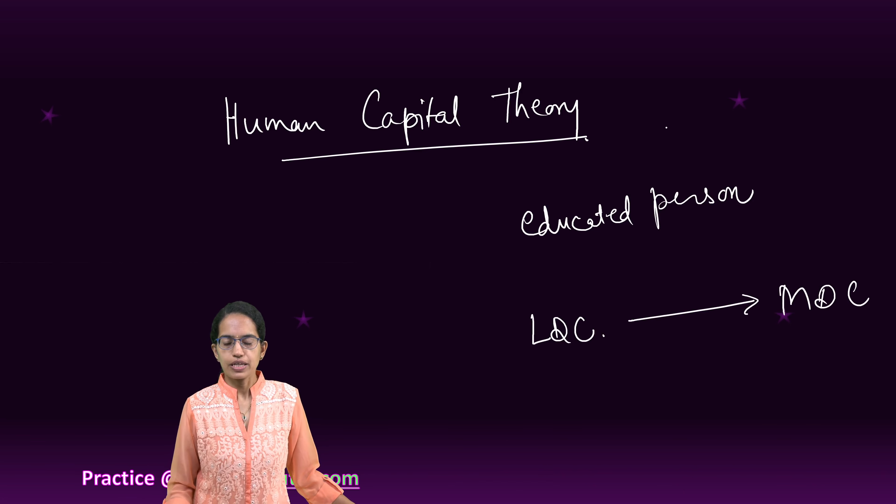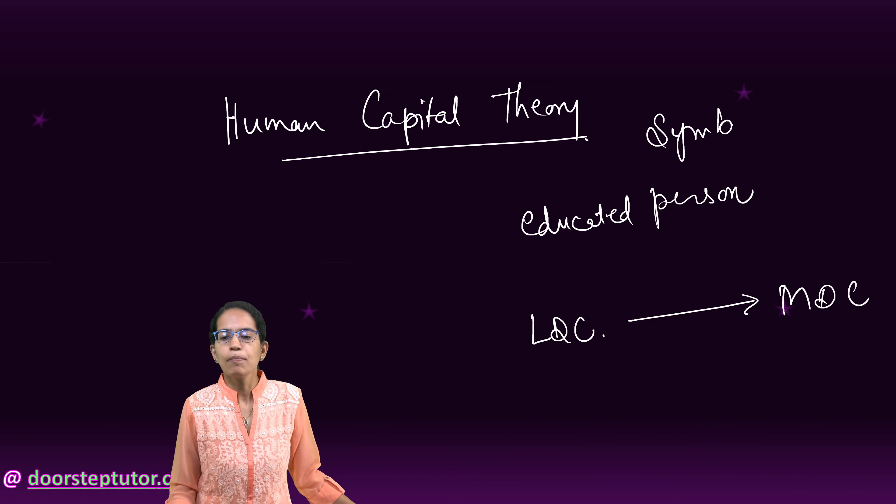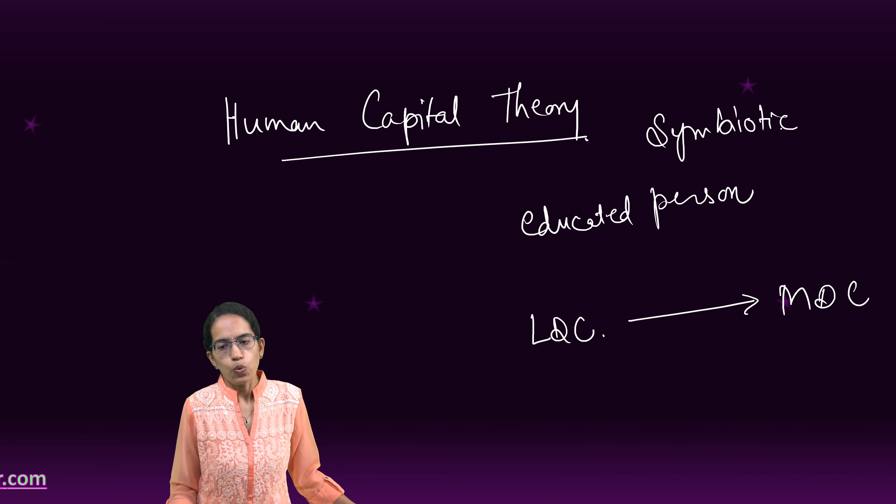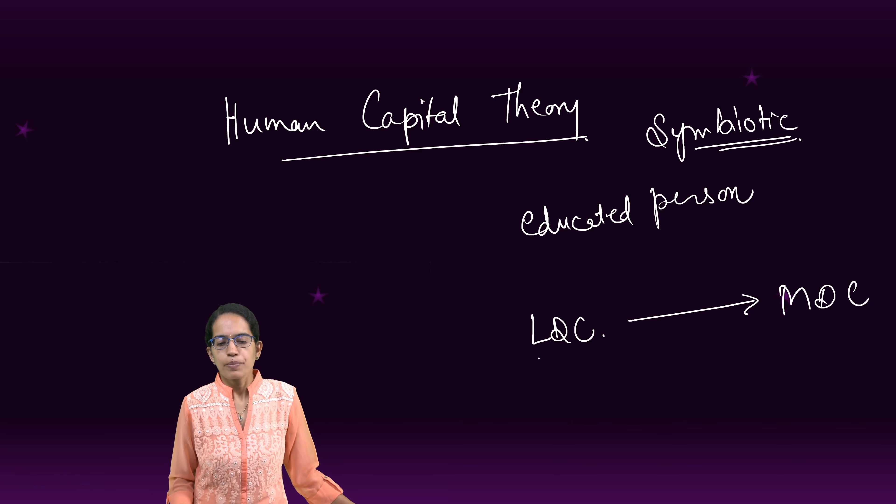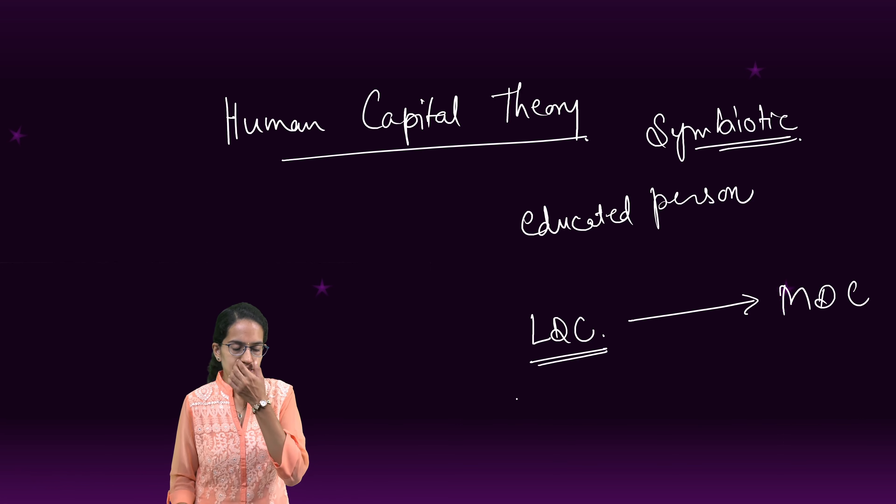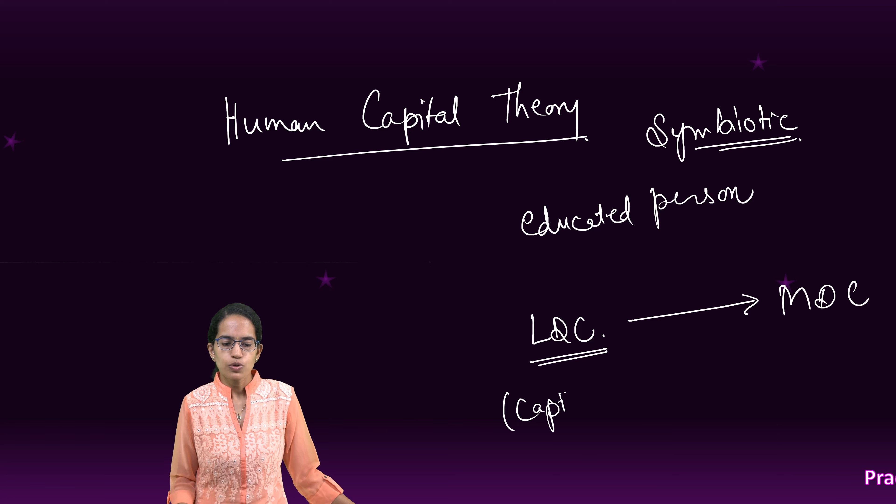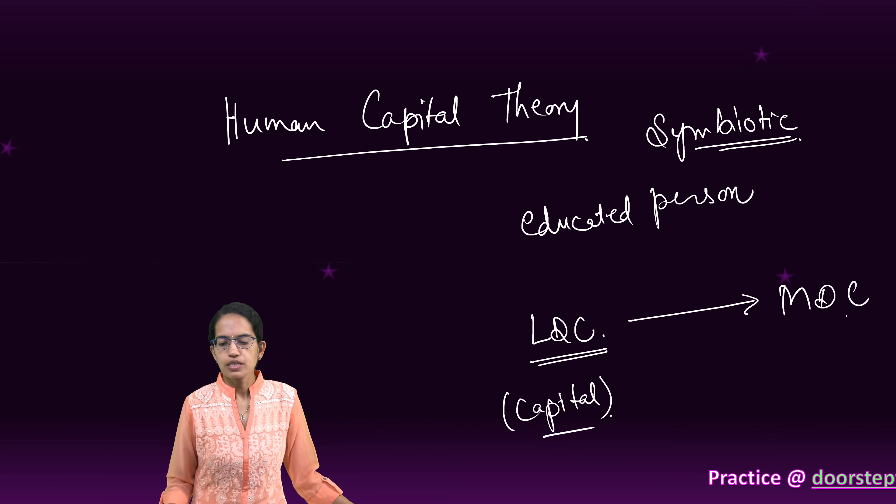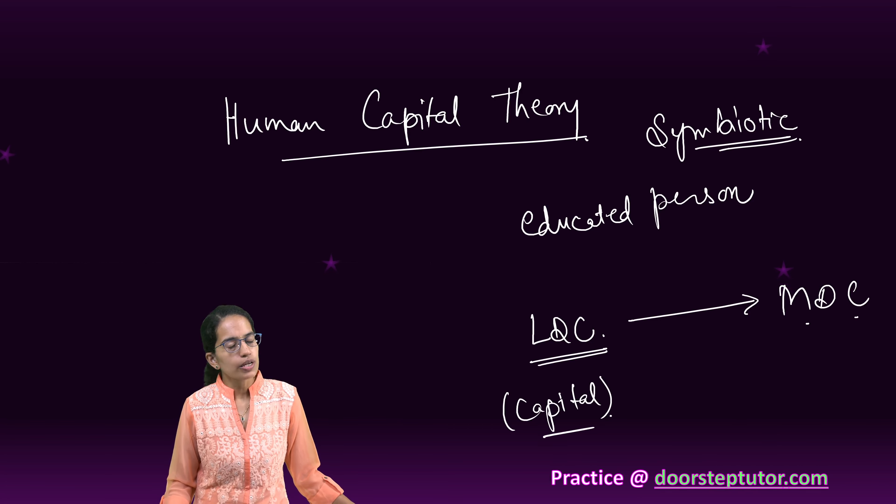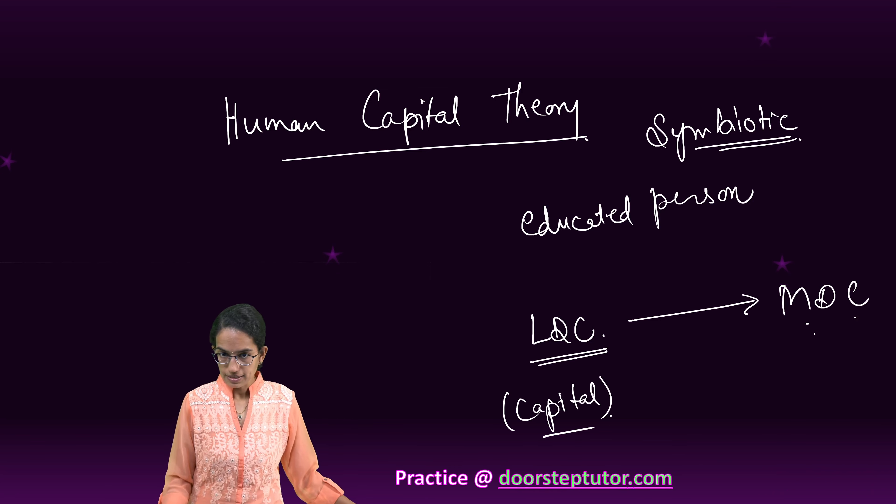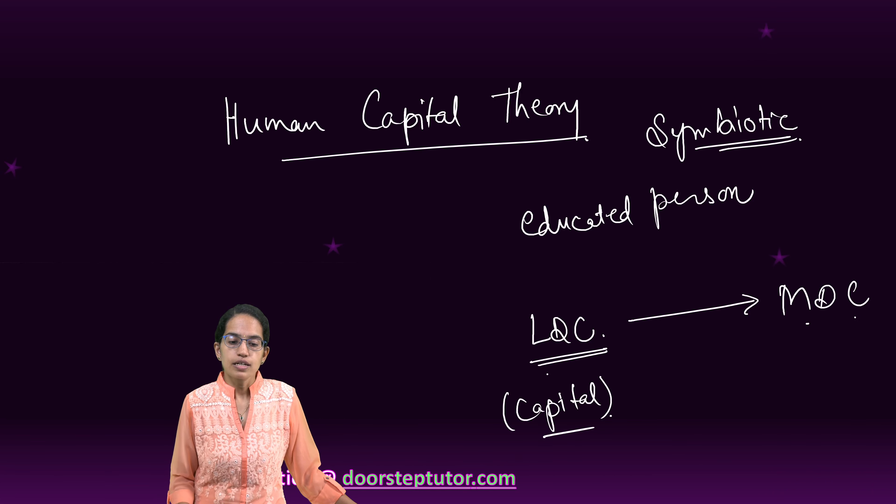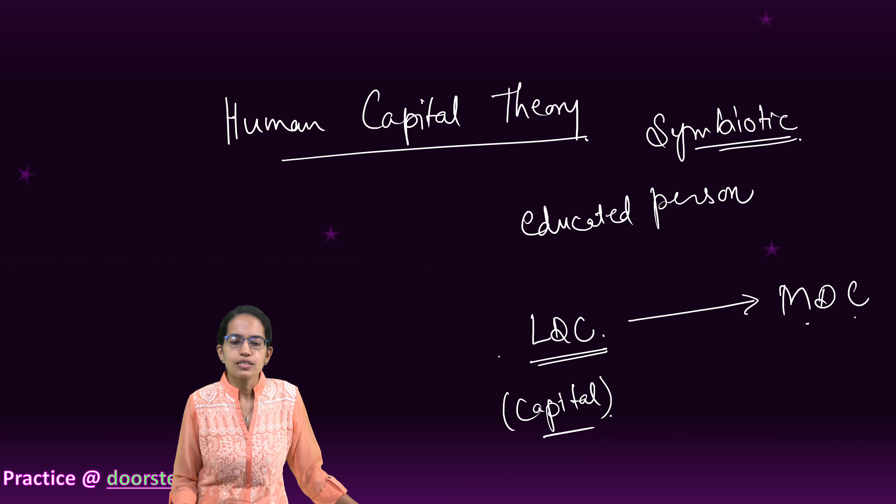Now this movement we can say is symbiotic in nature. Why is it symbiotic in nature? Because the less developed country would get the capital. The person who is employed in the more developed country from a less developed country would send the perks back to the country. So in turn this less developed country gets the capital.